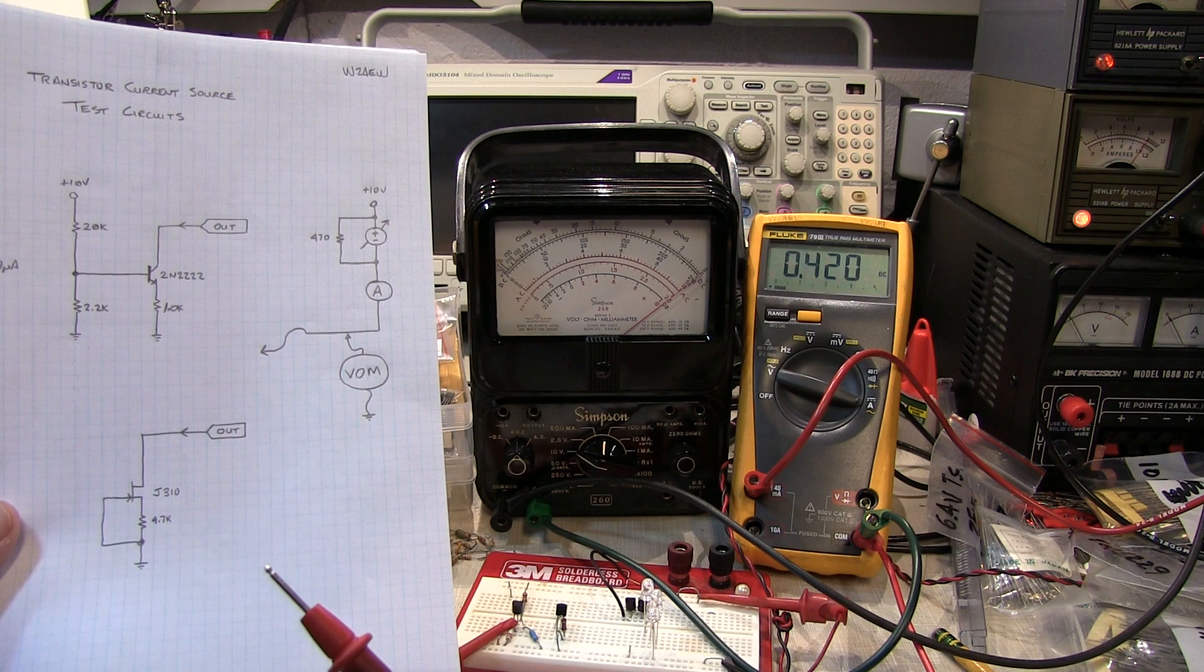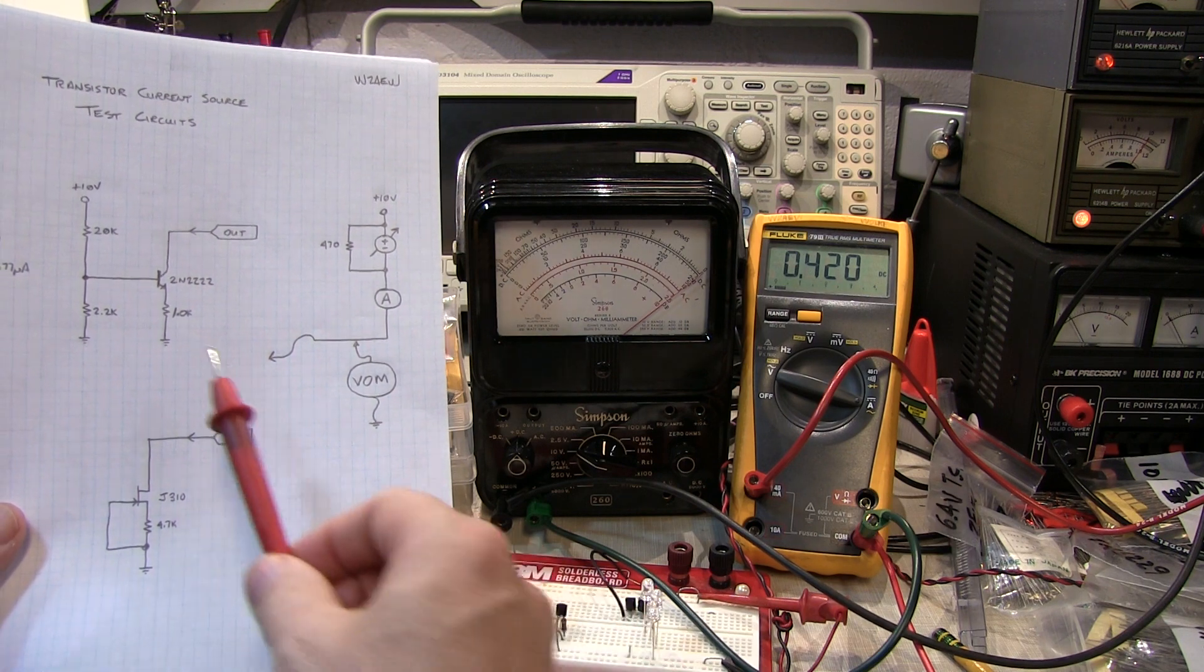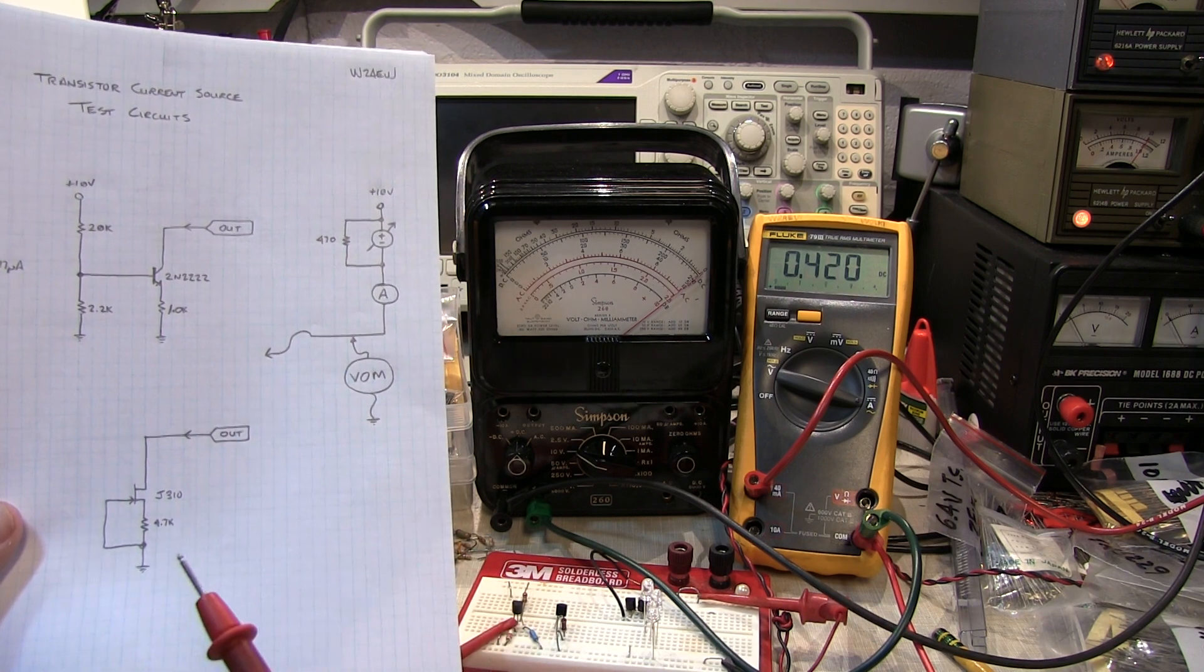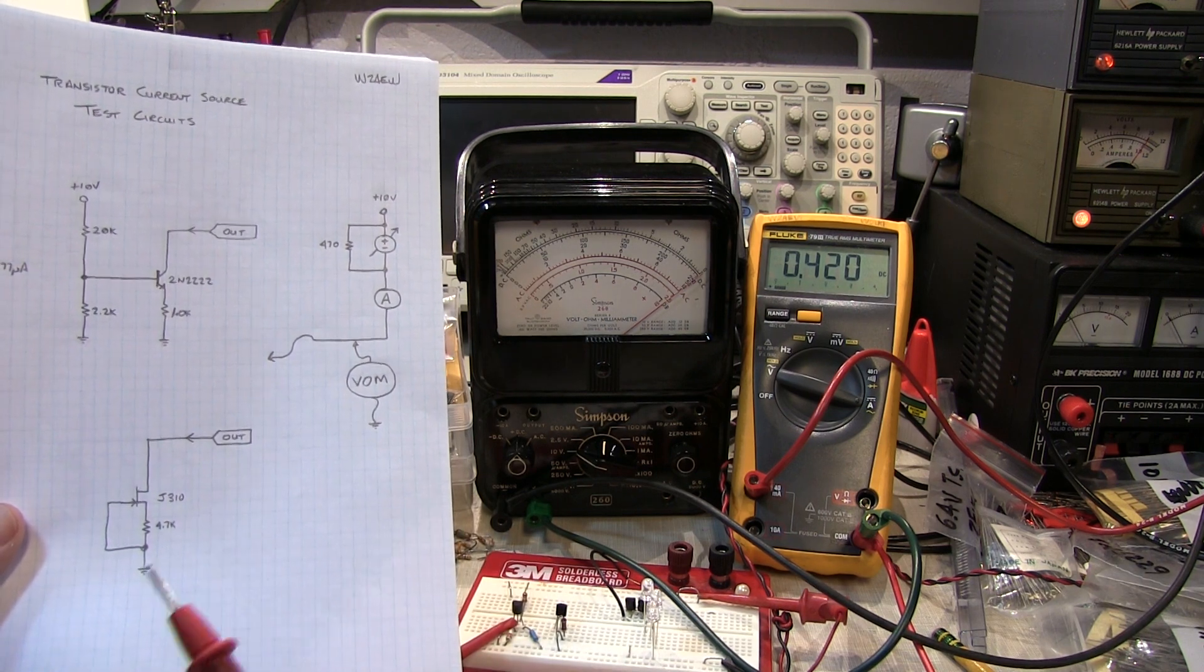And I had some clues that I screwed up, and I ignored them. The one clue that I had is that in previous experience I've had with current sources, I know that they measured much higher than 190k ohms. I just figured I had a crappy transistor, and I ignored that clue.